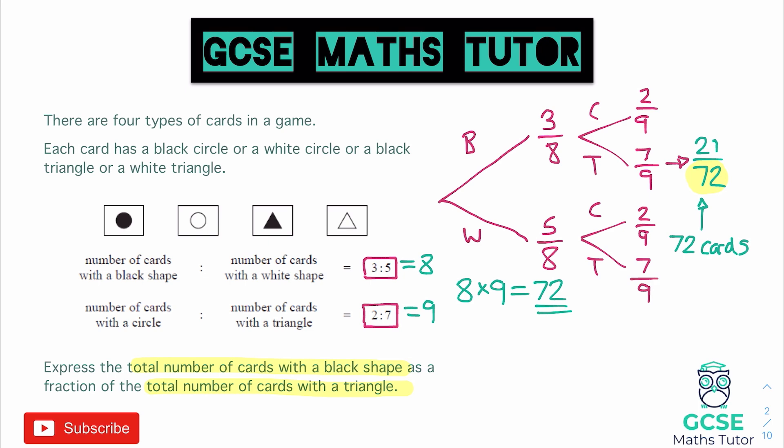okay, bear in mind there can be any multiple of 72, what amount are going to be, and let's just think about what we've been asked in the question, black shapes.